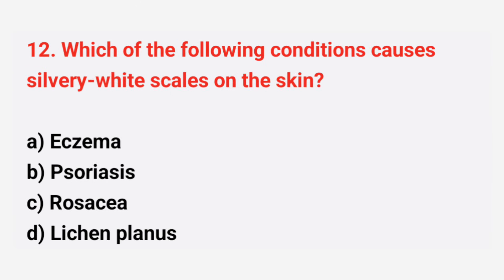Question number 12: Which of the following conditions causes silvery white scales on the skin? The right answer is option B, psoriasis.